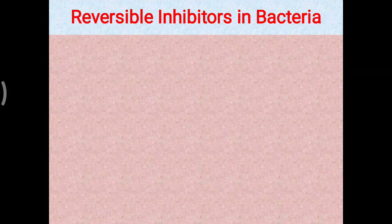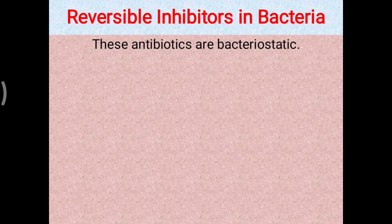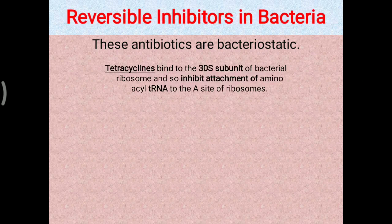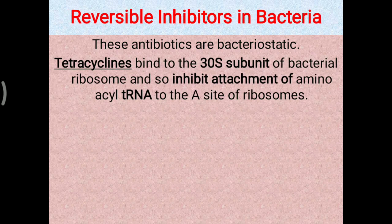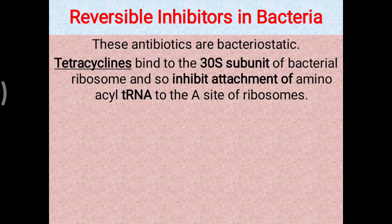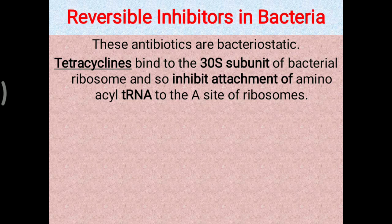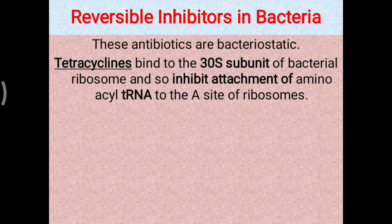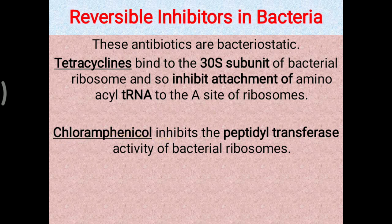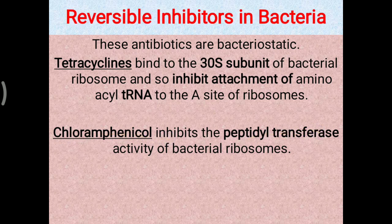Looking at reversible inhibitors in bacteria: this type of antibiotic works as a bacteriostatic, meaning when the molecule is given, the growth of bacteria will be inhibited. Tetracycline binds to the 30S subunit of the bacterial ribosome and inhibits the attachment of aminoacyl-tRNA to the A site of the ribosome. This process is essential for the incoming of a new amino acid as per the genetic codon on mRNA, and that will be inhibited.